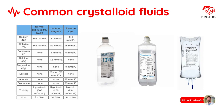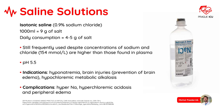Isotonic saline is still frequently used, despite concentrations of sodium and chloride being higher than those found in plasma. pH is 5.5. Indications are hyponatremia, brain injuries, or hypochloremic metabolic alkalosis. Complications include hypernatremia, hyperchloremic acidosis, and peripheral edema.